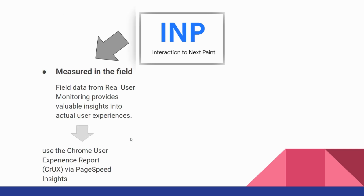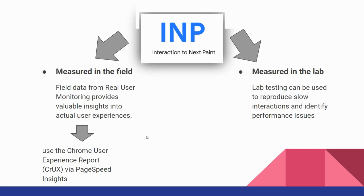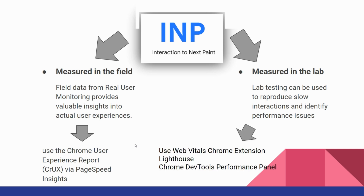Measuring INP can be done in the field or in the lab. Field data from real user monitoring provides valuable insights into real user experience, while lab testing helps to reproduce and identify performance issues. To analyze INP in the field, you can use real user monitoring with the web-vitals JavaScript library or Chrome User Experience Report with PageSpeed Insights. To measure in the lab, you can use the web-vitals Chrome extension or Lighthouse in Chrome DevTools performance panel.